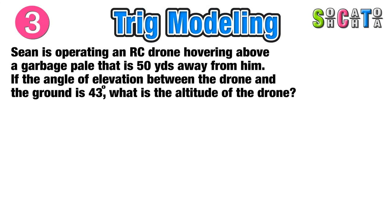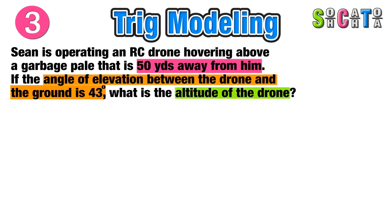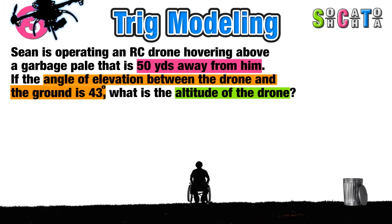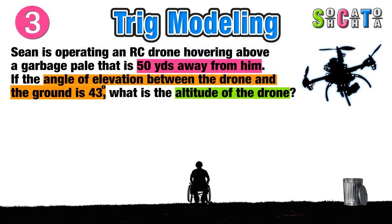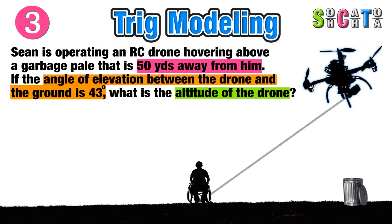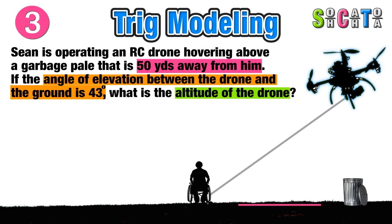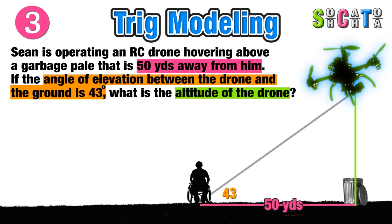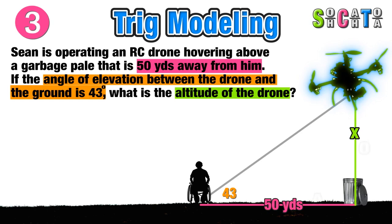Now let's move on to a slightly more advanced example. In this scenario, Sean is operating a remote-controlled drone hovering above a garbage pail that is 50 yards away from him. The angle of elevation between the drone and the ground is 43 degrees, and we want to find the altitude of the drone. Sean's location is on the ground, and the garbage pail is 50 yards away, with the drone flying directly above it.